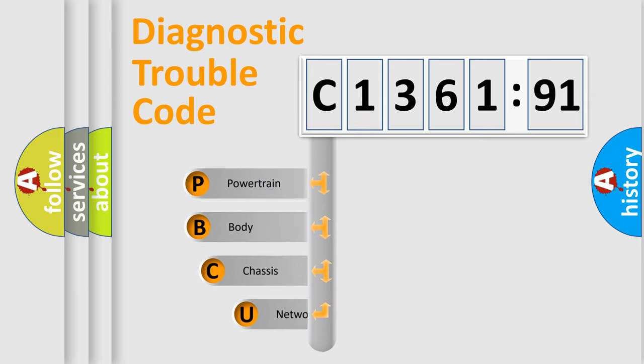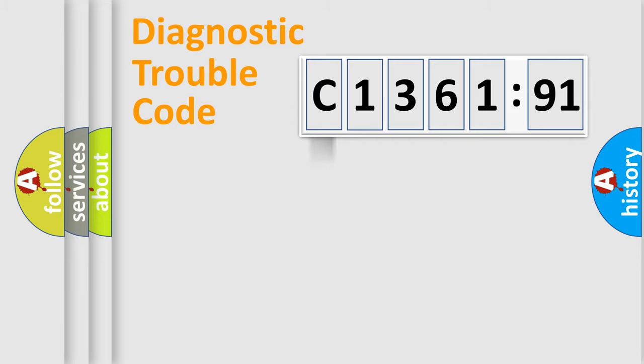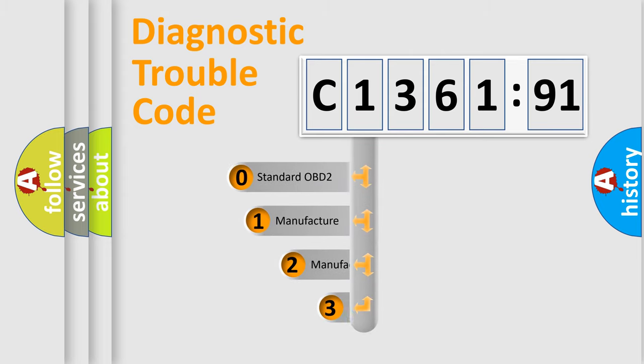First, let's look at the history of diagnostic fault code composition according to the OBD2 protocol, which is unified for all automakers since 2000. We divide the electric system of automobile into four basic units: Powertrain, Body, Chassis, and Network.